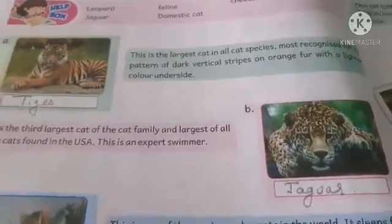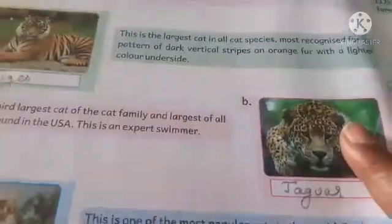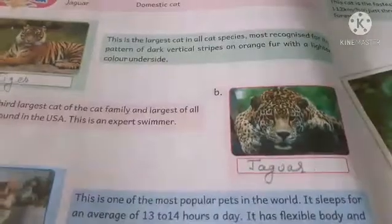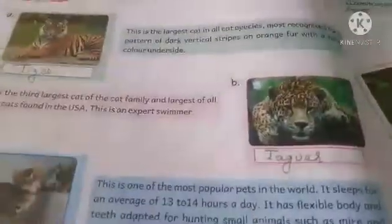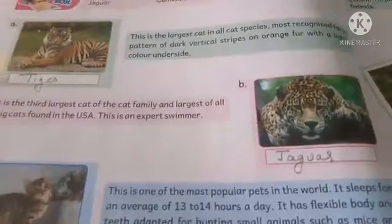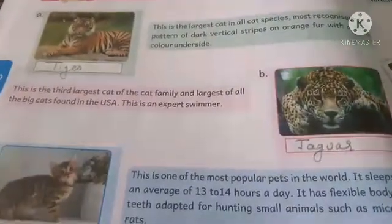This is the tiger — the largest cat in all the cat species, most recognized for the pattern of dark vertical stripes on orange fur.